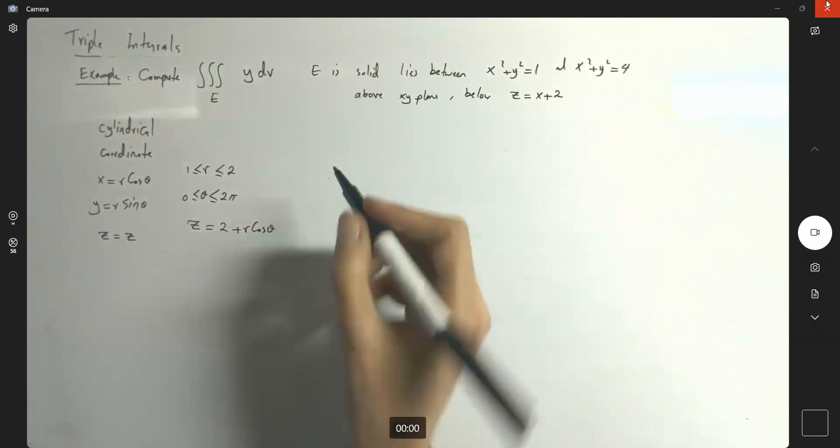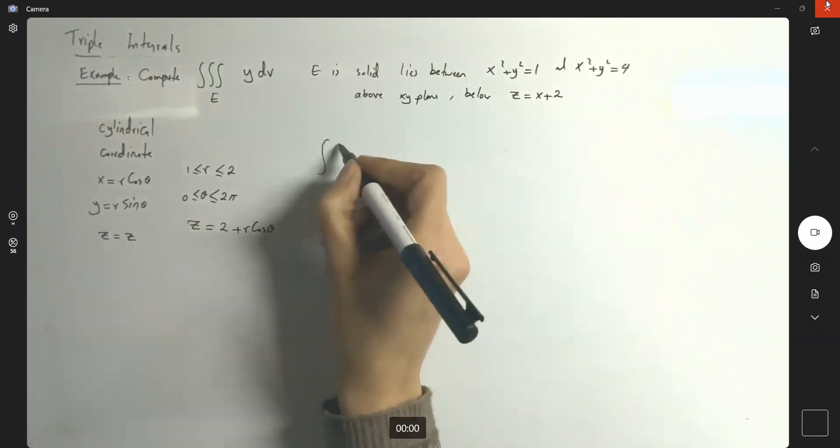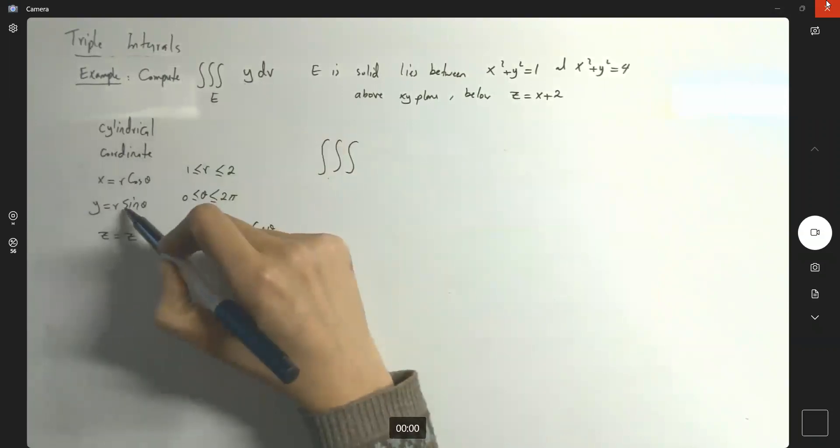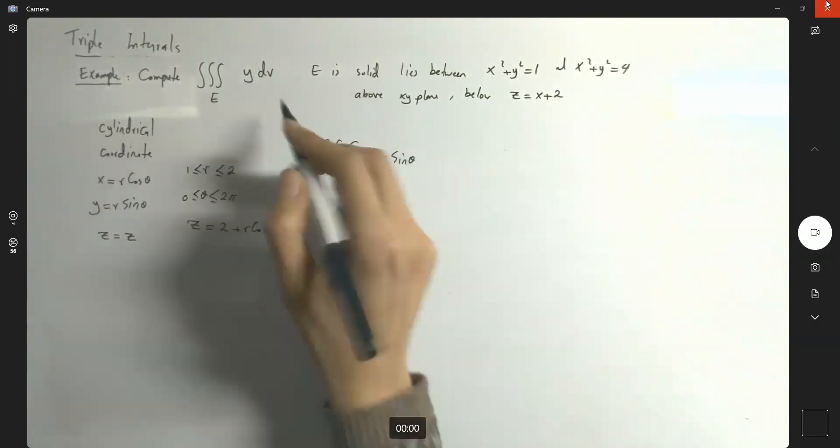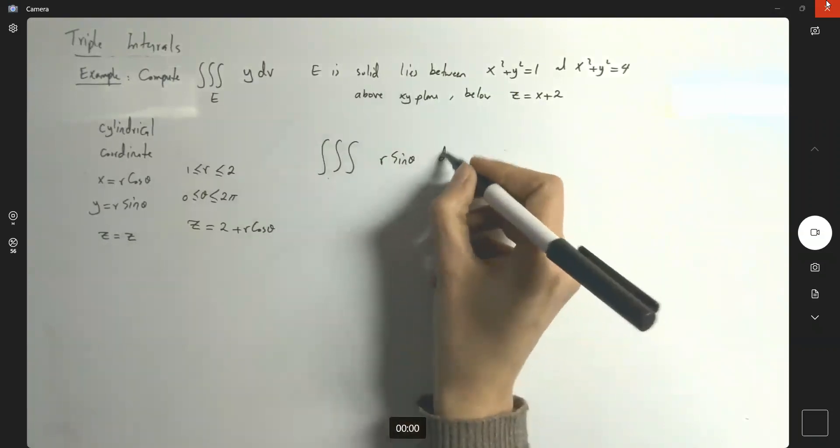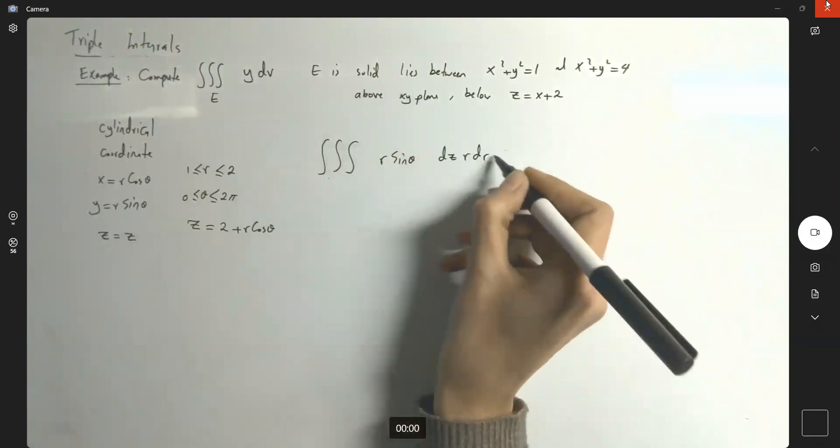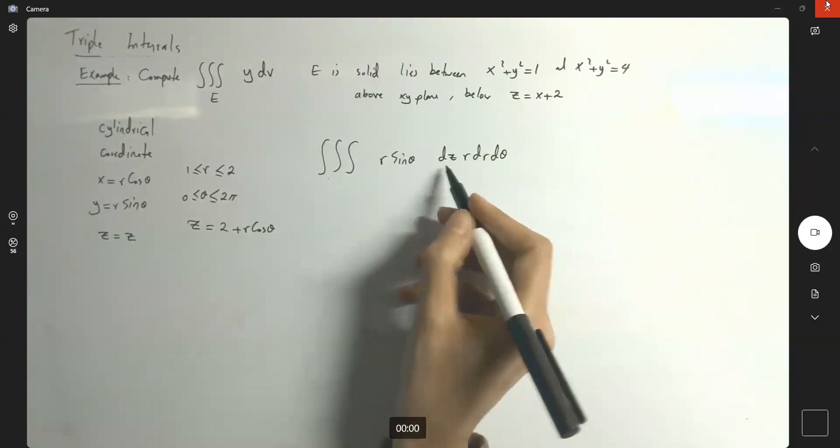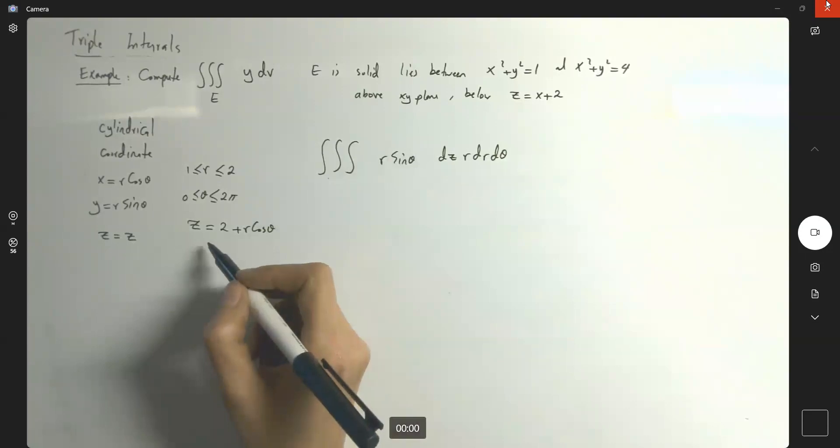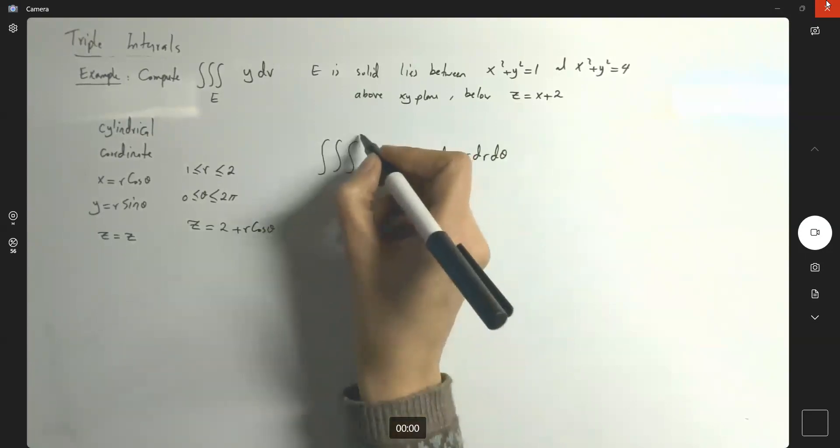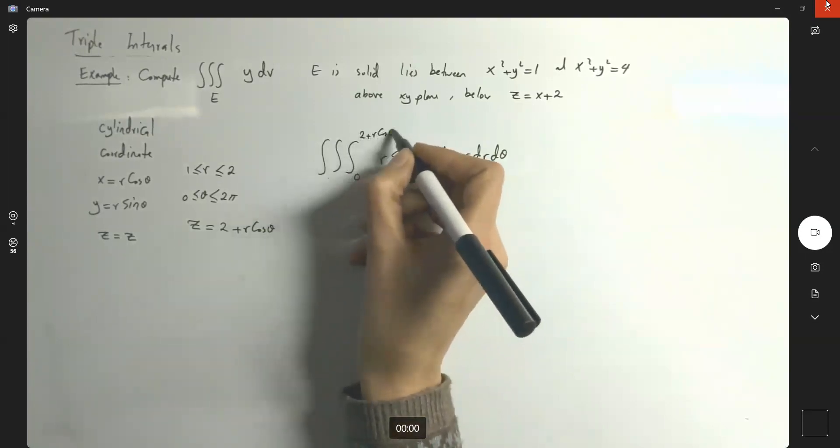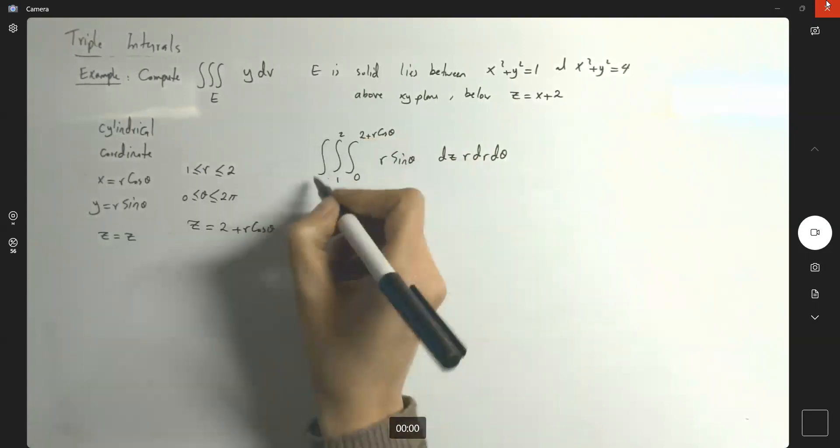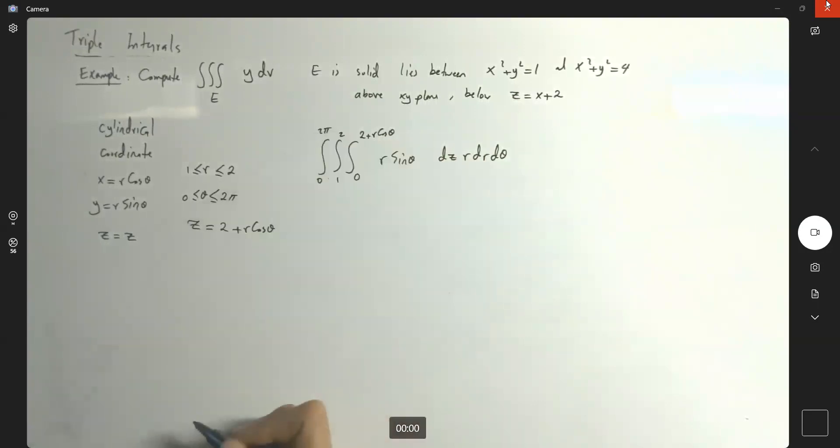So let us start computing this. We have a triple integral of y. The definition of y is r sine theta. My dV is r dz dr d theta. z is bounded between 0 and 2 plus r cosine theta. My r is bounded between 1 and 2. And my theta is bounded between 0 and 2 pi.